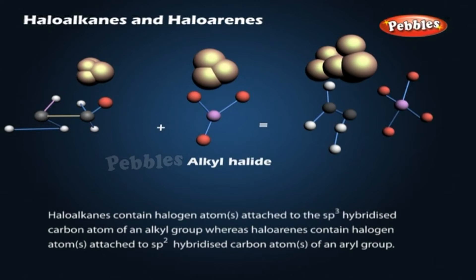Haloalkanes contain a halogen atom attached to the sp3 hybridized carbon atom of an alkyl group, whereas haloarenes contain a halogen atom or atoms attached to sp2 hybridized carbon atom or atoms of an aryl group.